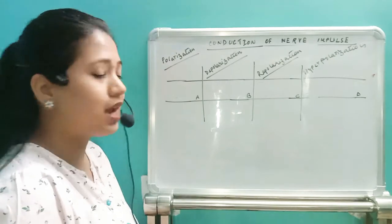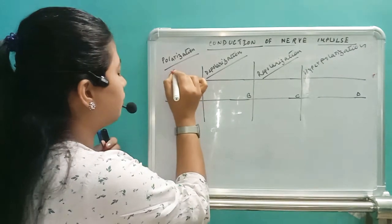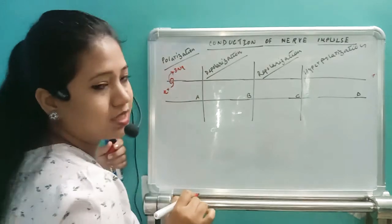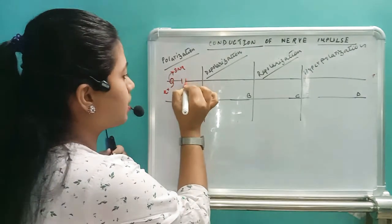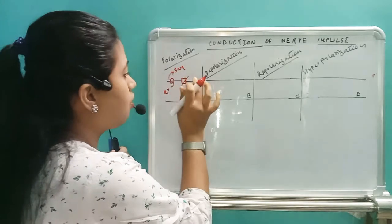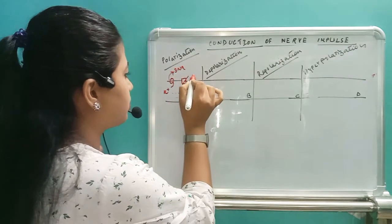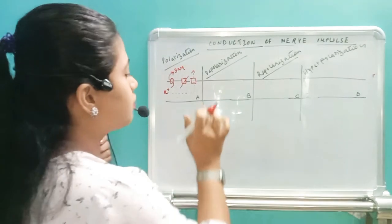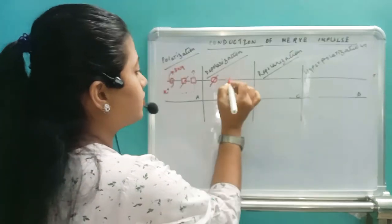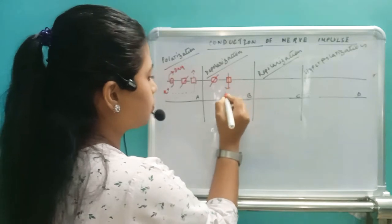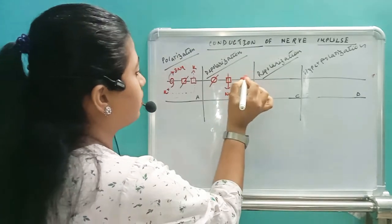In the state of depolarization, the sodium-potassium pump is deactivated. The sodium ion voltage-gate channel opens, causing entry of sodium ion inside. The potassium ion voltage-gate channel is closed. After the action of depolarization is complete, the neuron comes back to the state of polarization once again — this is called repolarization.